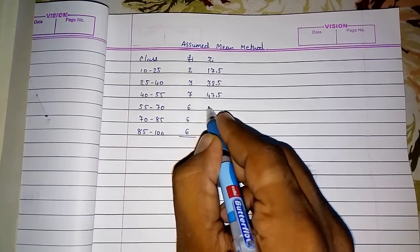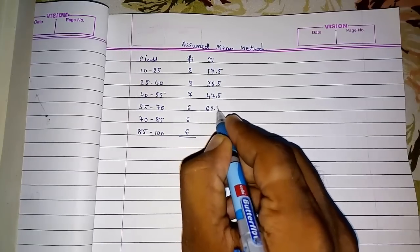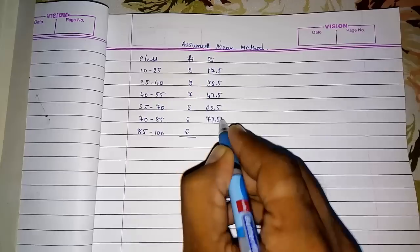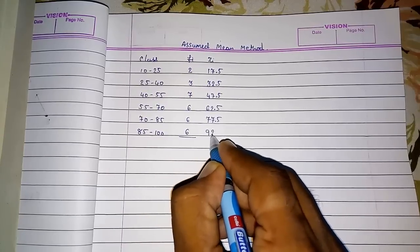And then this will be 62.5, this will be 77.5, and this is 92.5.